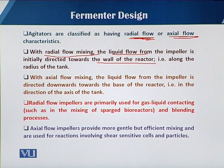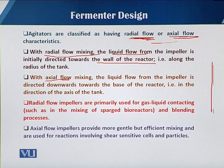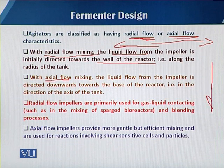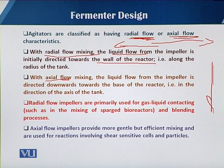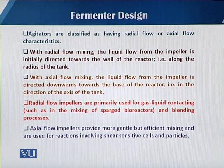In axial flow, movement is along the main axis toward the bottom, whereas in radial flow the movement is directed outward. The radial flow impellers are primarily used for gas-liquid contacting, while axial flow impellers provide more gentle but efficient mixing. We will talk about the details with graphical representation about both radial flow and axial flow.